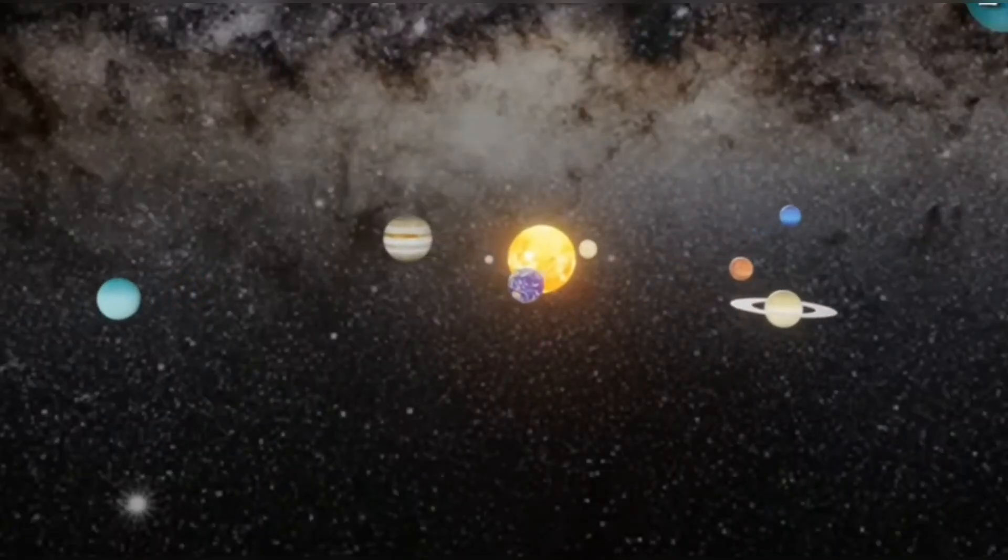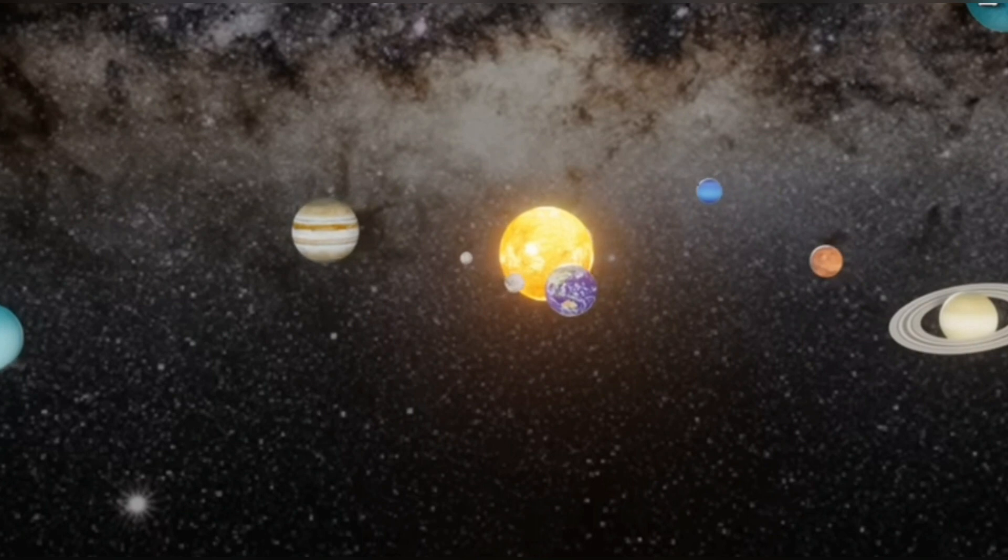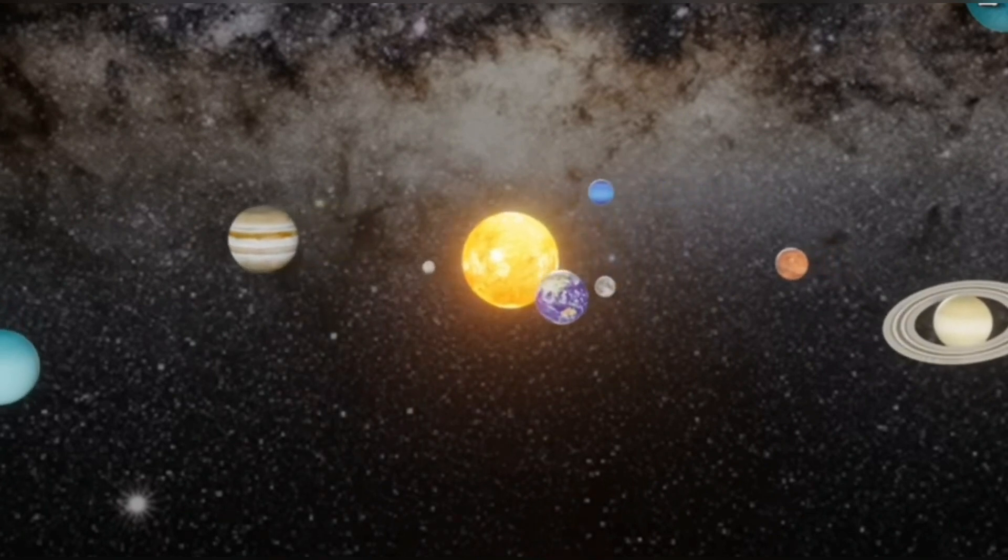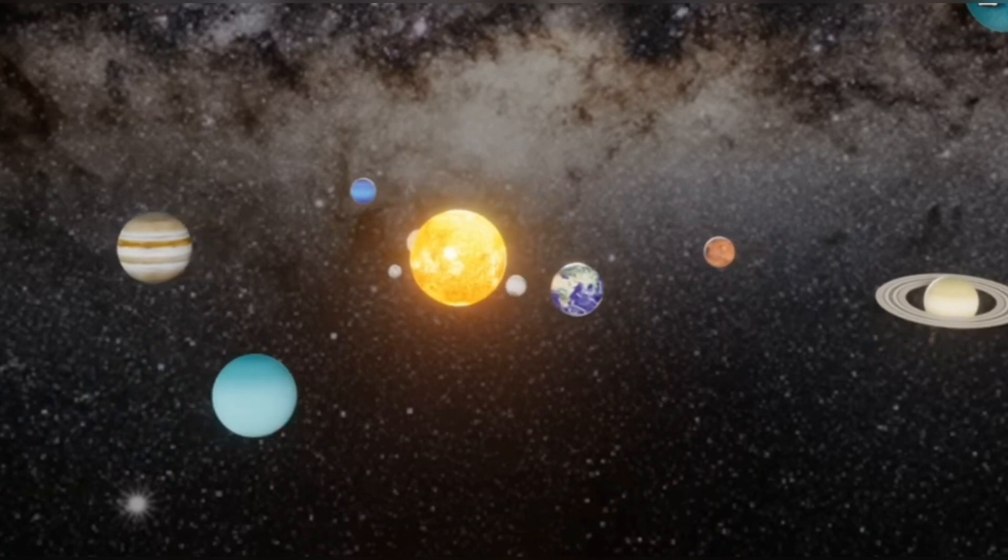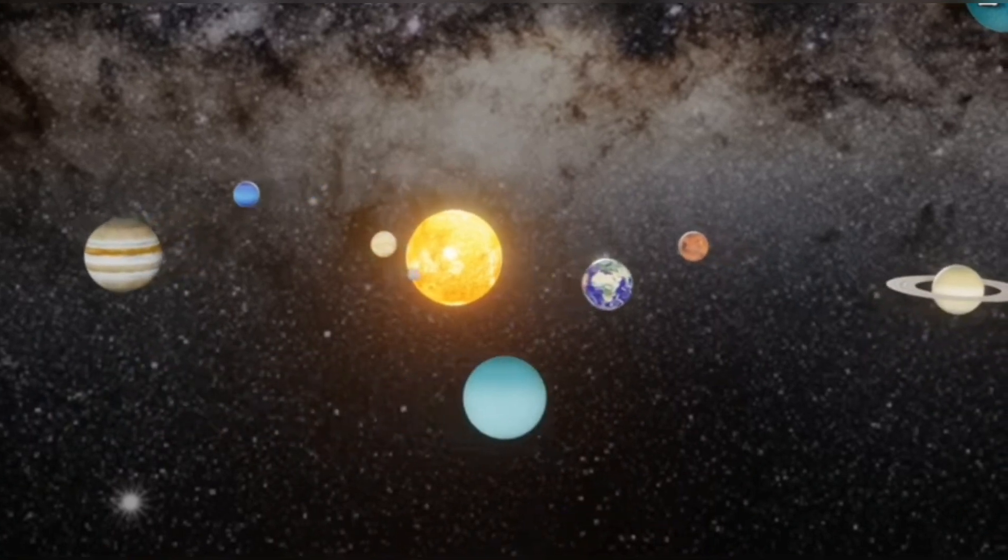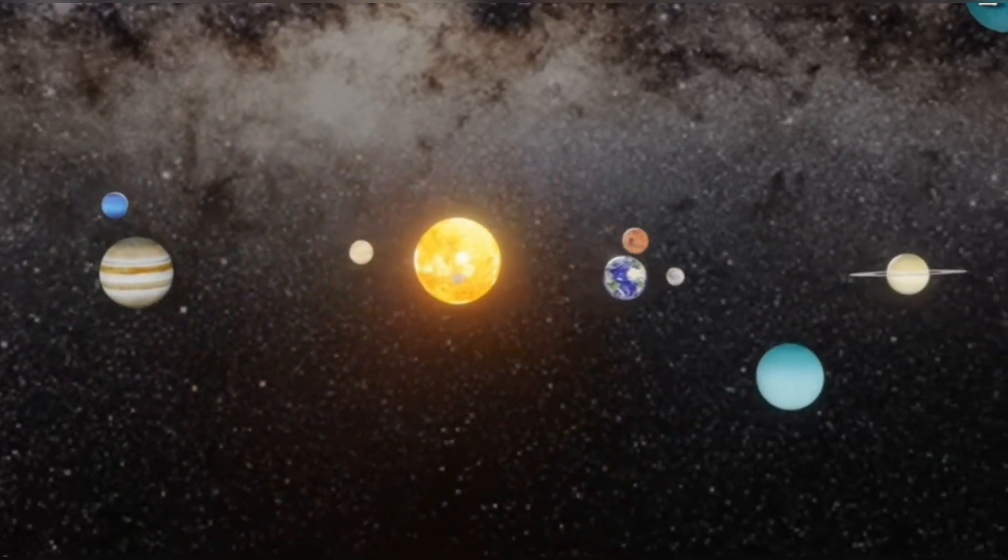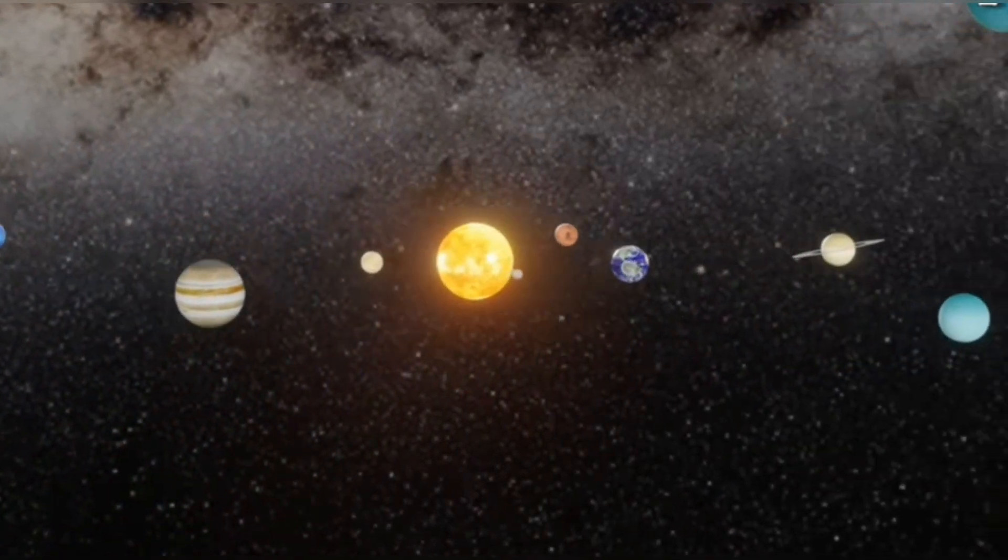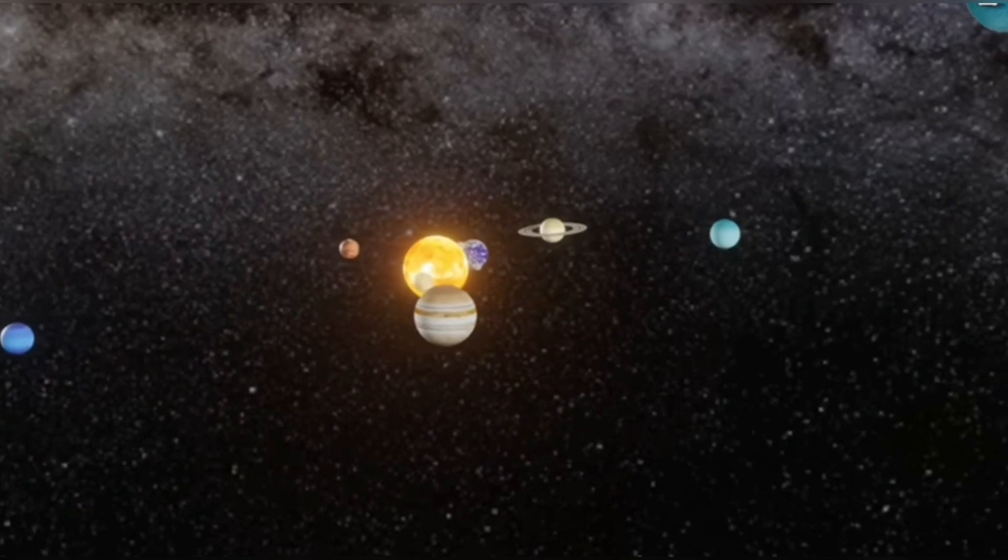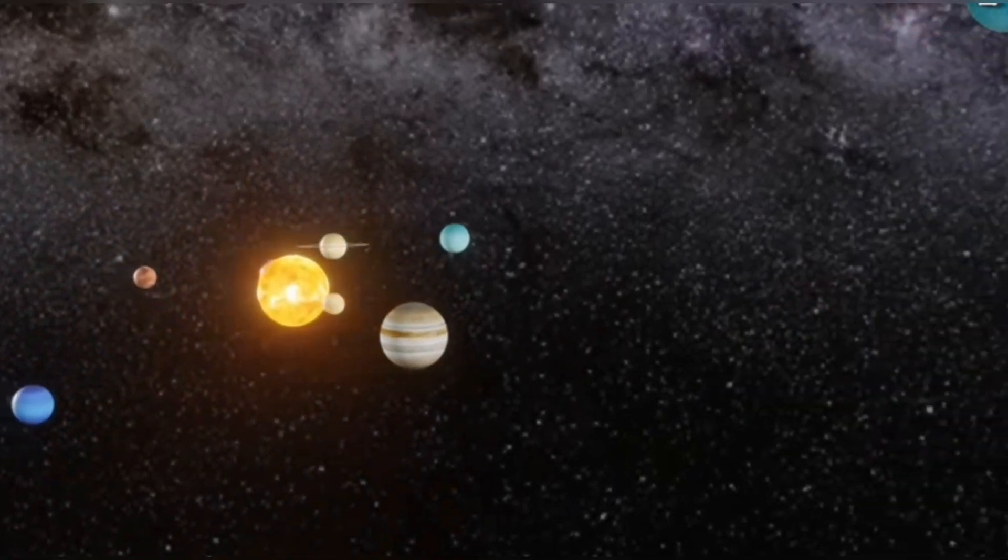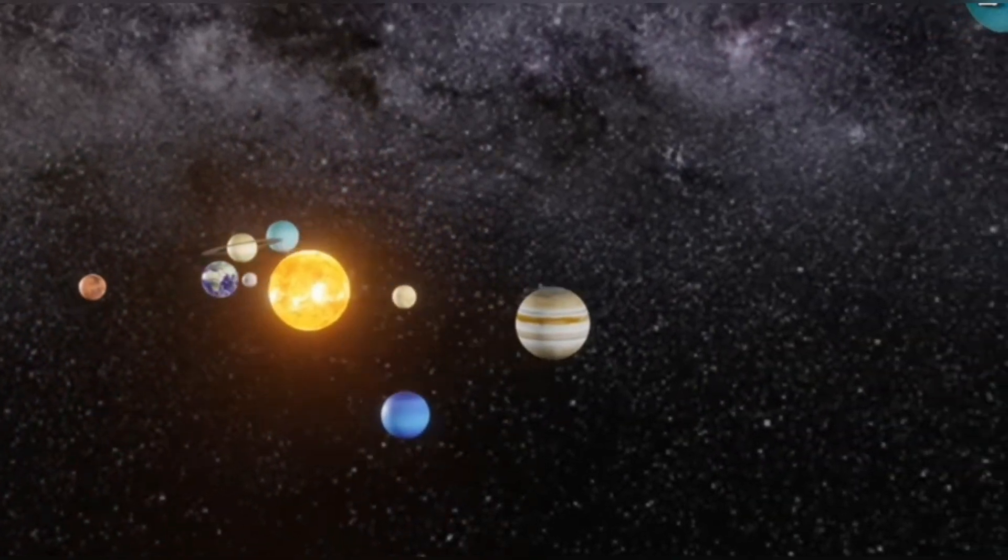As you all know, this is our solar system. It consists of a star and eight other planets that revolve around it. Like everything moving in space, Earth revolves around the Sun and the Moon revolves around the Earth. Likewise, all the other celestial bodies revolve around the Sun.